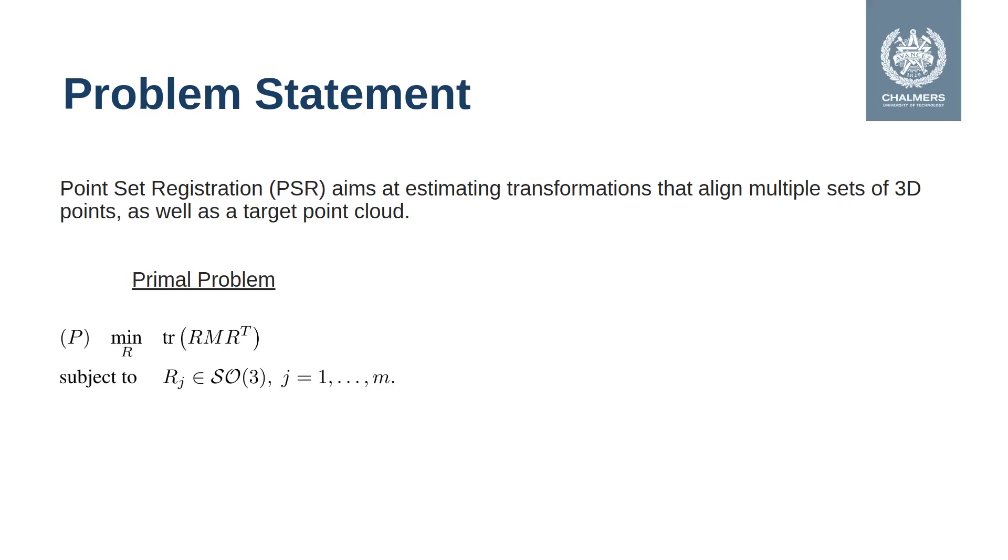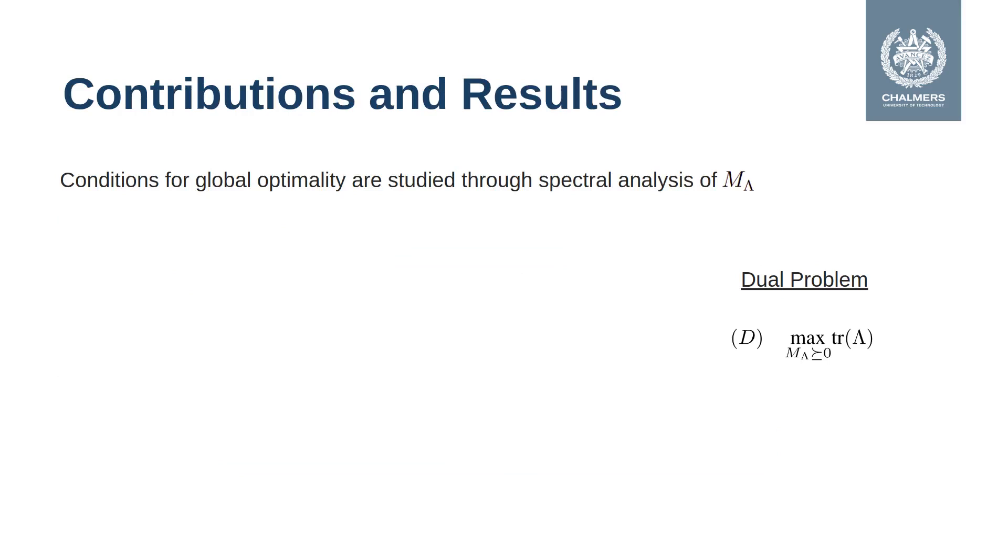The problem can be rewritten using the trace norm rotation as a function of the rotations, and by removing the determinant constraint on the rotations the dual problem can be obtained. In this work, we study the duality gap between the primal and the dual problem.